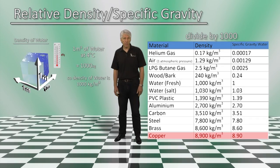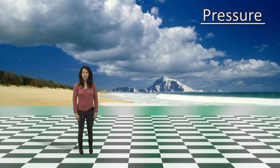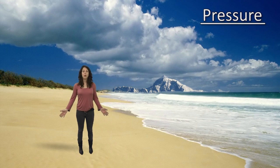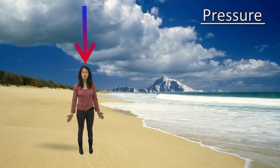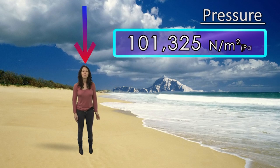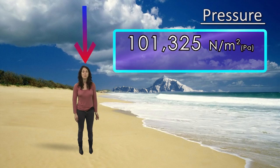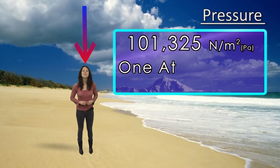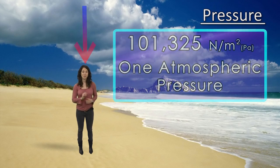To help us understand pressure, if you are standing at sea level, the weight of the Earth's atmosphere above you exerts a pressure in pascals on your body of 101,325 newtons per meter square. This is known as one atmospheric pressure.